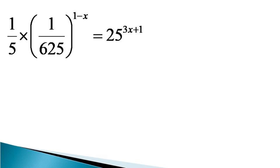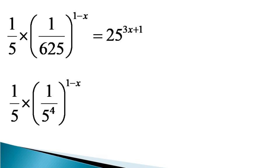To solve this equation, we express all the numbers as the powers of their prime factors. So 625 can be expressed as 5 raised to the power 4, and the left hand side becomes 1 by 5 into 1 by 5 raised to the power 4, whole raised to the power 1 minus x. And 25 can be expressed as 5 raised to the power 2, and the right hand side becomes equal to 5 square raised to the power 3x plus 1.